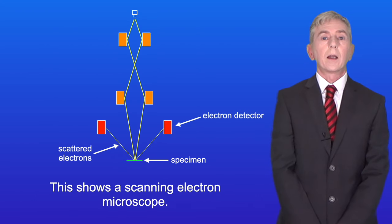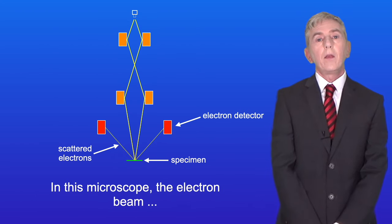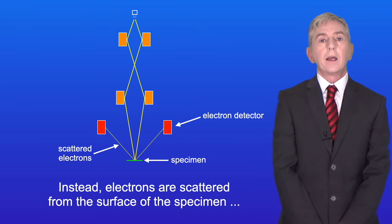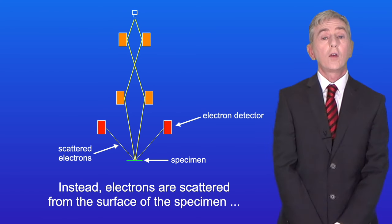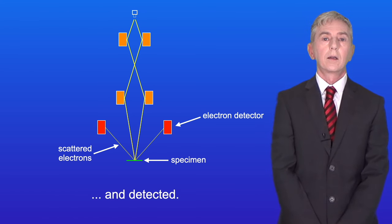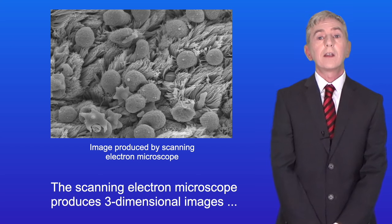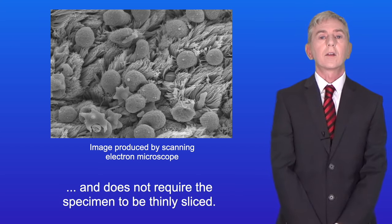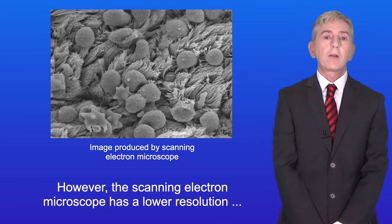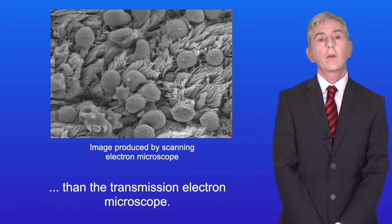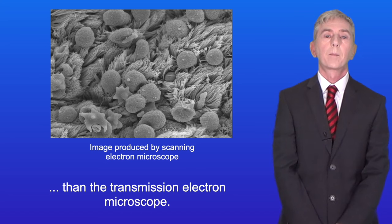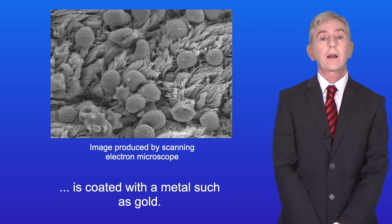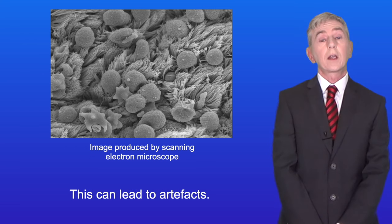This shows a scanning electron microscope. In this microscope, the electron beam does not pass through the specimen. Instead, electrons are scattered from the surface and detected. The SEM produces three-dimensional images and does not require the specimen to be thinly sliced. However, the SEM has a lower resolution than the TEM. The SEM also requires that the specimen is coated with a metal such as gold, which can lead to artifacts.